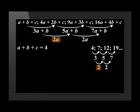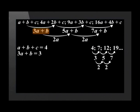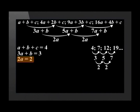This means that A plus B plus C is equal to 4, 3A plus B is equal to 3, and 2A is equal to 2. This is the easiest equation to solve, so let's start with this one. If 2A is equal to 2, it means that A is equal to 1.